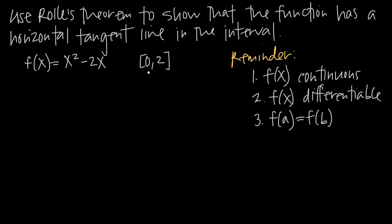First, f(x) has to be continuous in the interval 0 to 2. This is a simple polynomial function, which means it's going to be continuous because all polynomial functions are continuous. There's no denominator that could be 0, no square root with a potential negative value, and no natural log with a negative argument. So there's nothing about x² - 2x to make us think the function would be discontinuous, and since it's a polynomial, it is continuous.